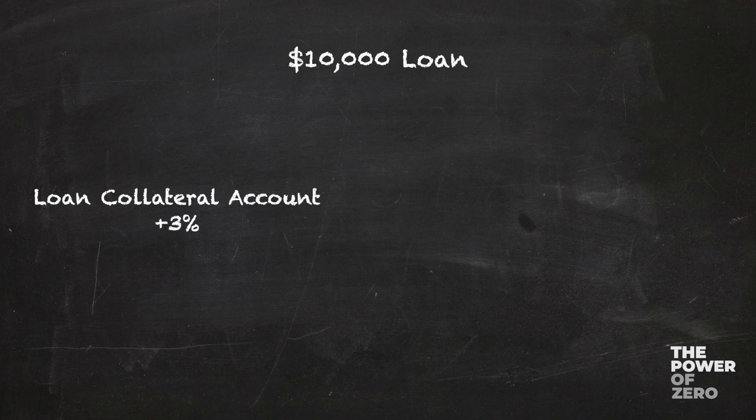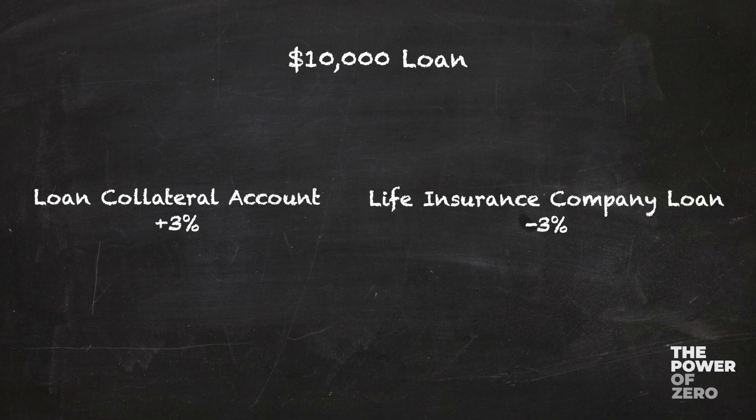For this example, we'll say 3%. In the very same transaction, the life insurance company sends you a loan from their own coffers. This is a loan, so you should expect it to come with an interest rate — let's say that's also 3%. When you die, all the money in the loan collateral account is used to pay back the outstanding loan that you have with the company. If the interest charge on the loan is the same as the interest being credited in the loan collateral account, the net cost to you over the course of your lifetime is zero.